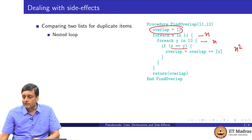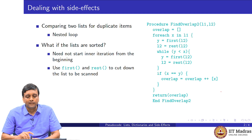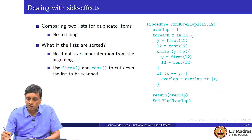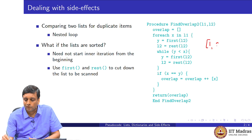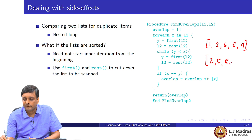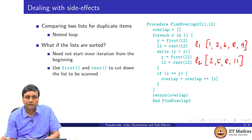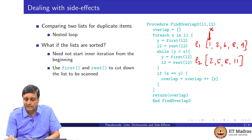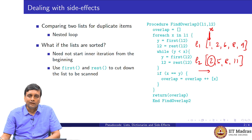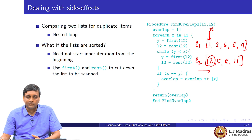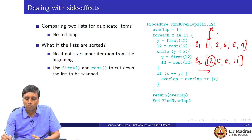The question is whether we can do better. Suppose we know the lists are sorted — for example, L1 is [1, 2, 6, 8, 9] and L2 is [2, 5, 8, 11]. When looking at the first x in L1, we can scan L2 only until we find something bigger than or equal to x. Once we pass x, nothing further can be equal to it because the list is sorted.